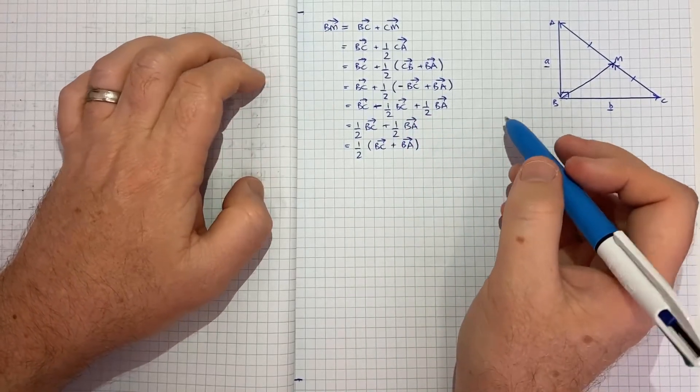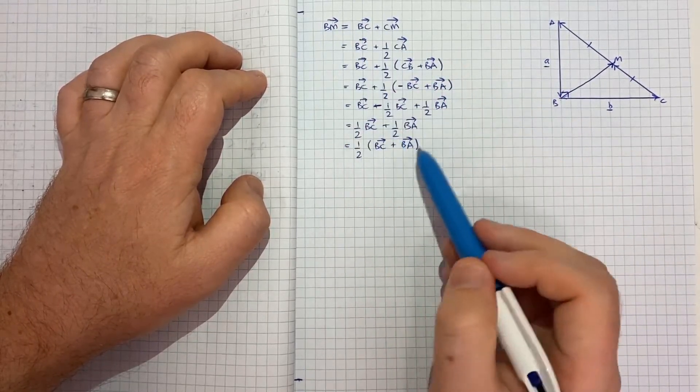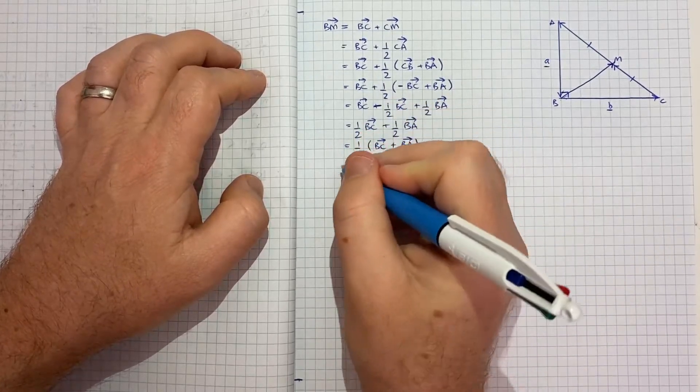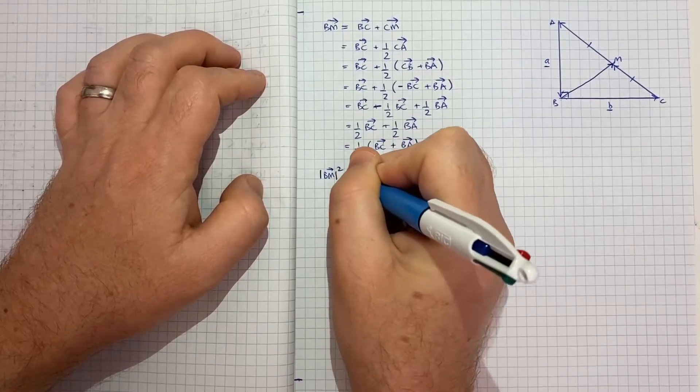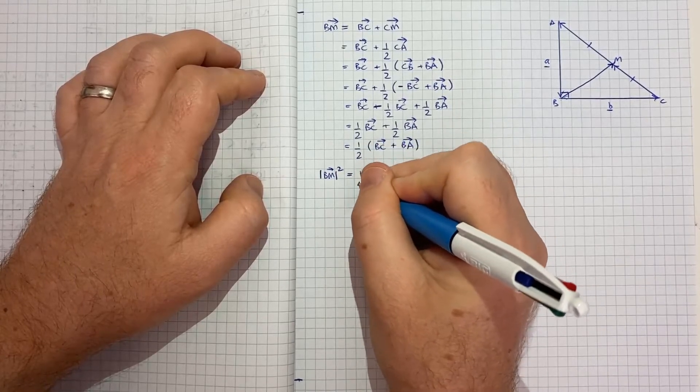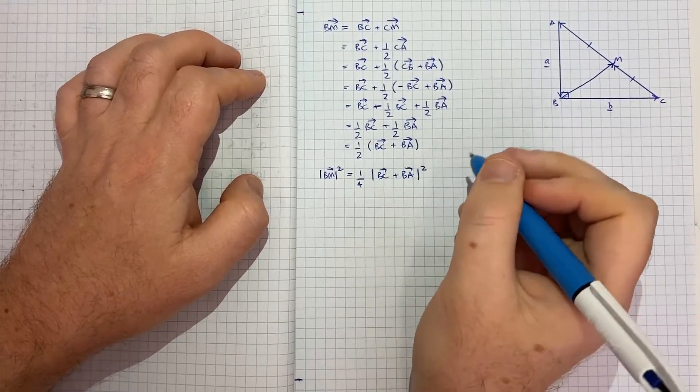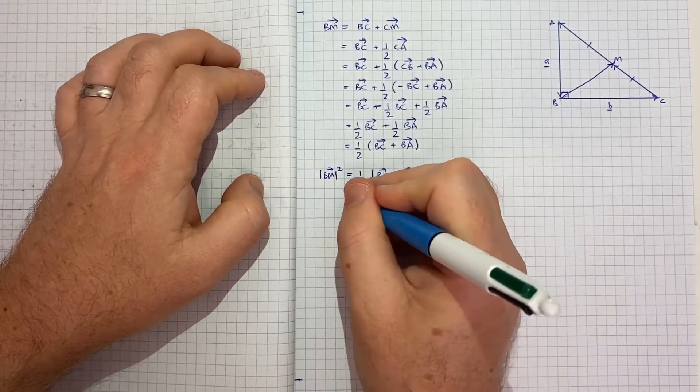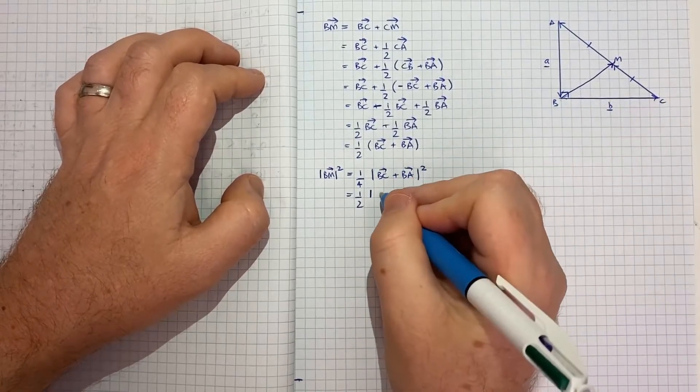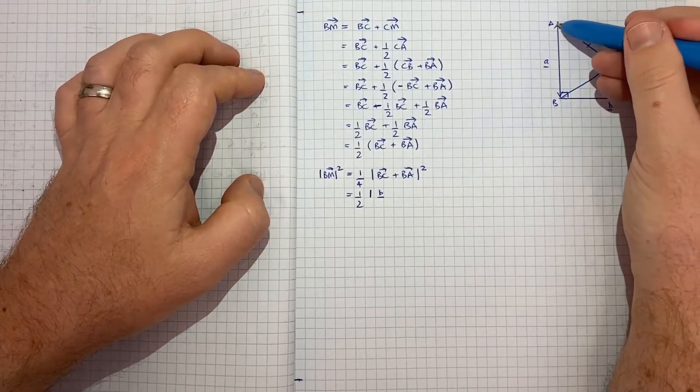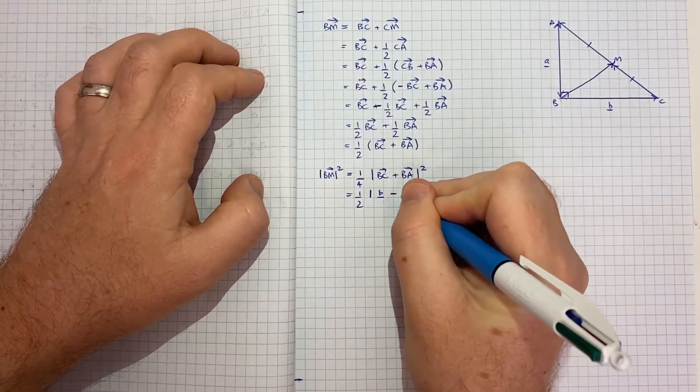Now at this point, we can square both sides. So essentially multiply b m by b m, and multiply this by this. And that squaring gets us into magnitude form. So we'll have the magnitude of b m squared is equal to half times a half is a quarter, times the magnitude of b c plus b a squared. Now that's equal to a quarter times the magnitude. Now b to c, we're told, is the vector b. b to a is the same as a to b, but in the opposite direction. So that's minus vector a squared.